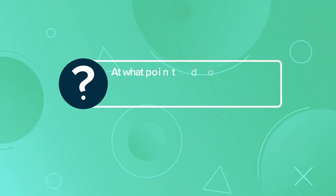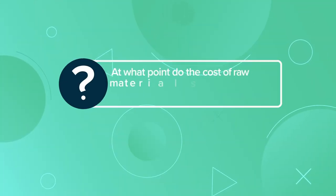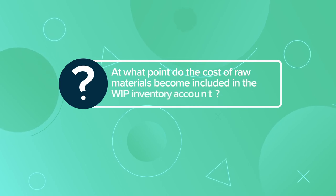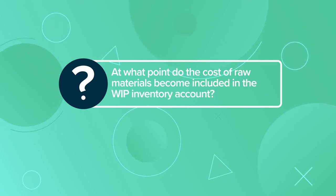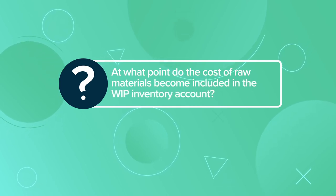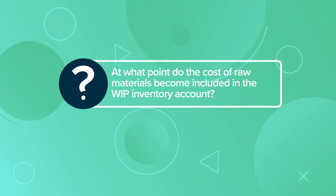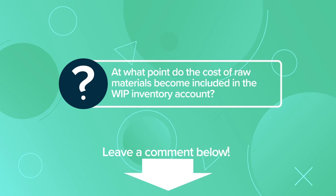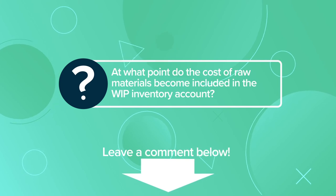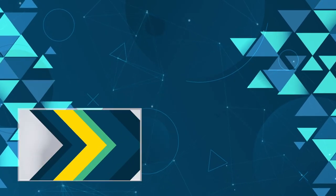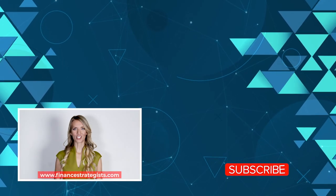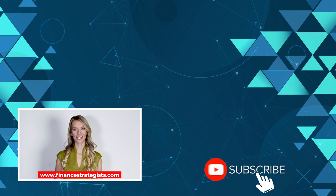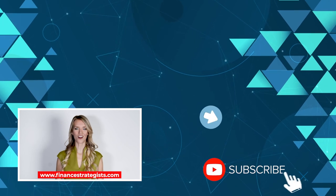Let's test your comprehension. At what point do the cost of raw materials become included in the work in progress inventory account? Leave a comment below. For more information, visit www.financestrategist.com.